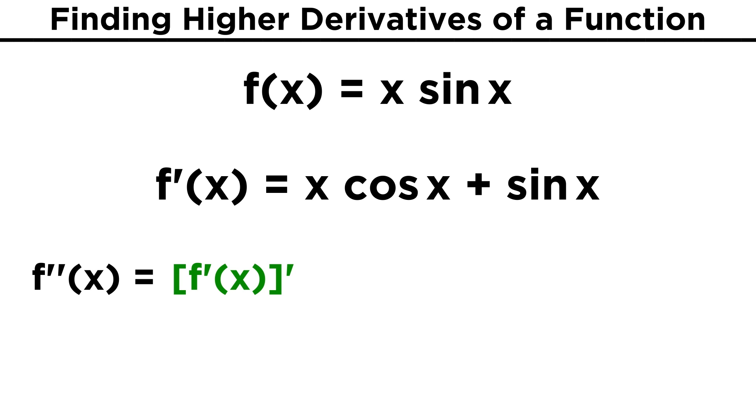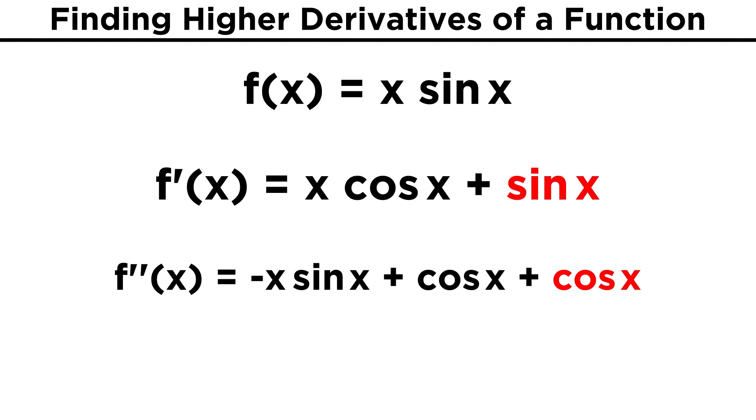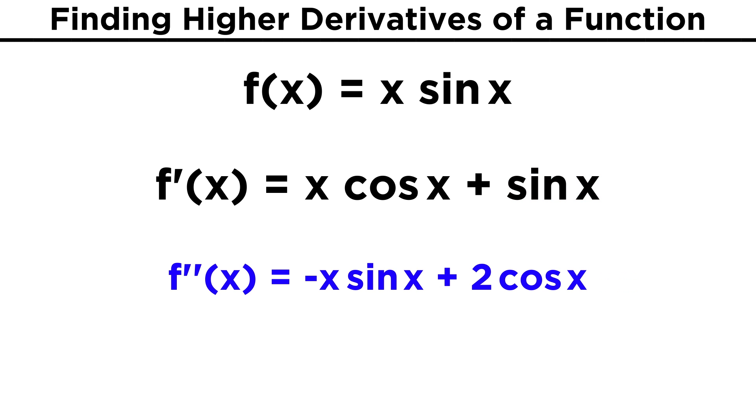Then to get the second derivative, we just take the derivative of this new function. For the first term, again we need the product rule. So we set it up just as we are used to, and evaluate the derivatives. That should give us negative x sine x plus cosine x, and then we can't forget this other term here, which simply becomes cosine x. So that gives us negative x sine x plus 2 cosine x as our answer.